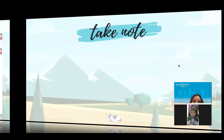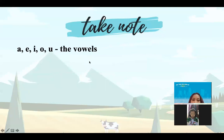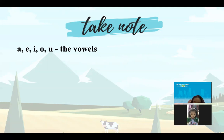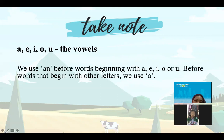Chúng mình sẽ sang cái part 2. Take note. Hôm trước cô vừa dạy con này: A, E, I, O and U là the vowels. Nên là trước đứng trước những cái đó, mình sẽ không dùng 'a' mà dùng 'an'. Ví dụ: a hand, a head, a tail. Nhưng khi cái từ bắt đầu bằng âm A, E, I, O, U thì mình sẽ dùng 'an'. The vowels: A, E, I, O, U. We use 'an' before words beginning with A, E, I, O, or U. Before words that begin with other letters, we use 'a'.